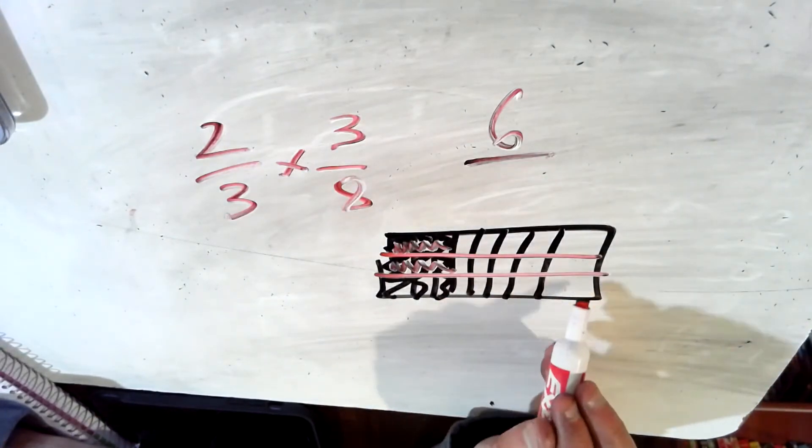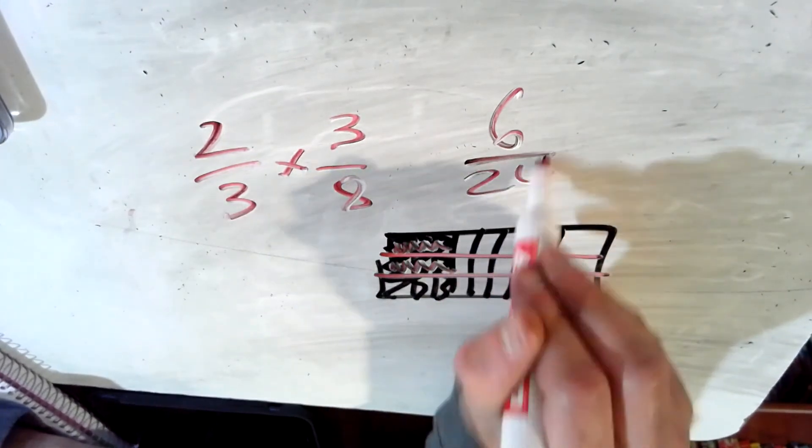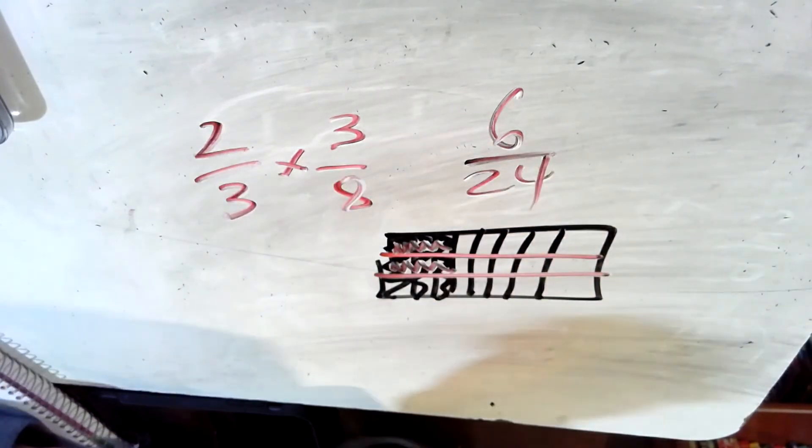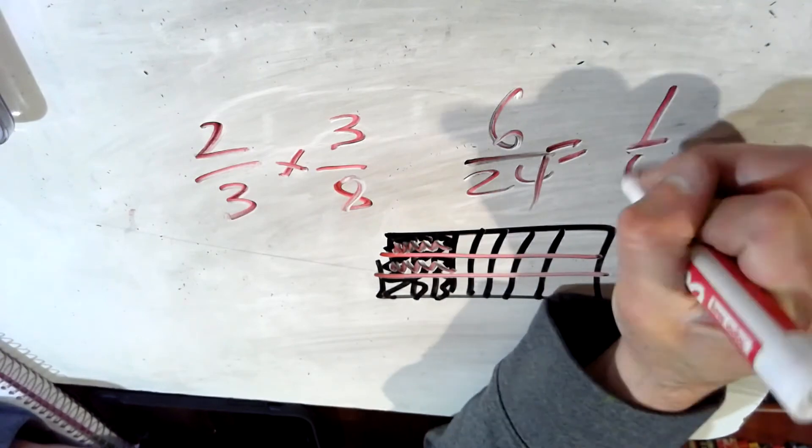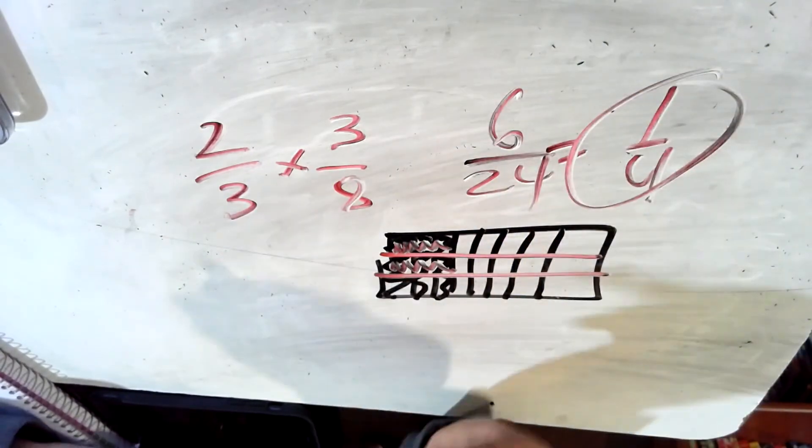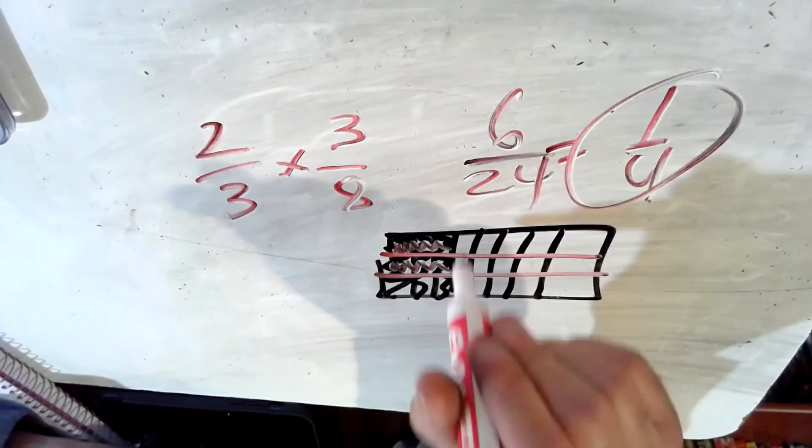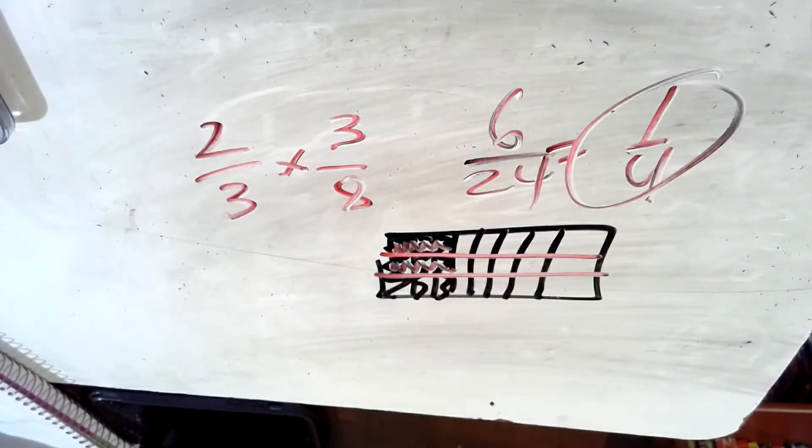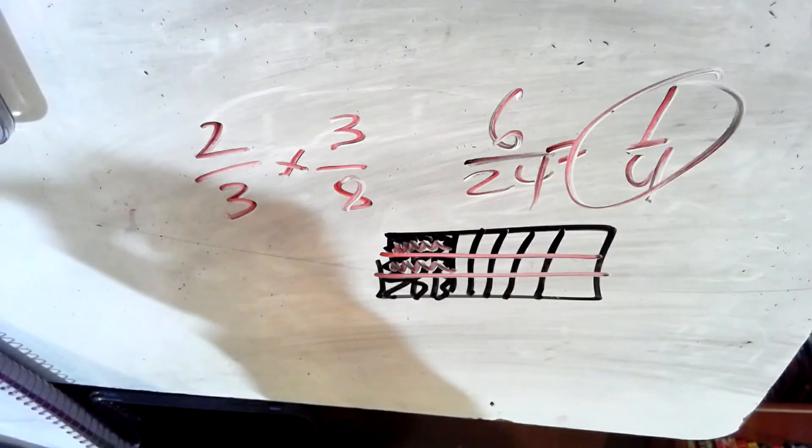That'd be 1, 2, 3, 4, 5, 6. Six out of 1, 2, 3, 4, 5, 6, 7, 8, 16, 24. Six out of 24. Which is 2 times 3 is 6. 3 times 8 is 24. And in simplest form, of course, that's 1 fourth. 6 divided by 6 is 1. 24 divided by 6 is 4. In simplest form, it would be 1 fourth. Hopefully, that's the same answer that you got.